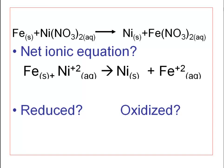In our net ionic equation, iron solid reacts with the nickel ion to produce solid nickel and an iron ion. Iron was originally a zero charge and became +2 in the products — to become positive you must lose negative charges, i.e., electrons, so iron was oxidized. Nickel was originally +2 and became zero in the products — it must have gained two electrons to cancel that positive charge. So nickel gained electrons and was reduced, per OIL RIG.